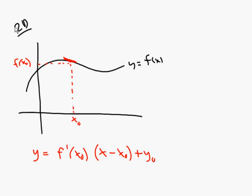What's nice about tangent lines — we learned this in single variable calculus — is that when you have a smooth differentiable function, if you're near the point of tangency, like inside this little green window, then that red tangent line does a pretty good job of approximating the y values of the black y equals f of x function. Sometimes you've heard the term local linearity.